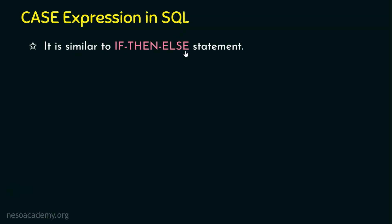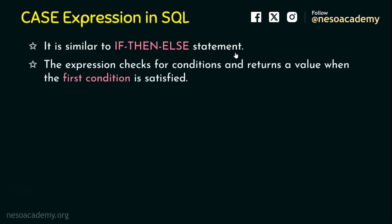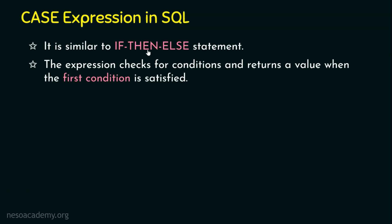The case expression is similar to the if-then-else ladder statement that we have in traditional programming languages. The expression checks for conditions and returns a value when the first condition is satisfied. If the first condition is not satisfied then it will go to the second condition, and if the second condition is satisfied that value is returned, else it will go to the third condition and so forth. However, the syntax is going to be a bit different.